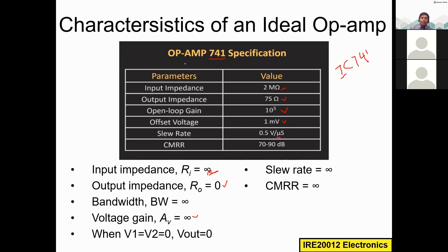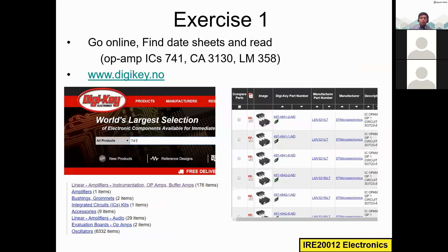The CMRR is not infinity either — it is 70 to 90 dB. When you look at the datasheet of any op-amp IC, you will see these details, which are very important for building circuits using that IC.